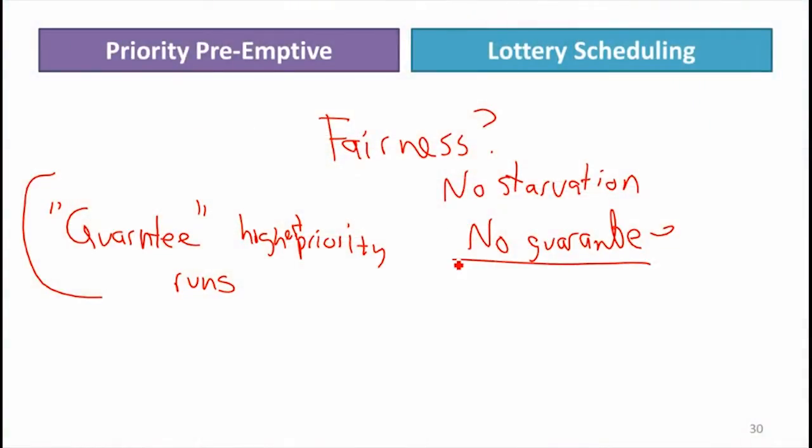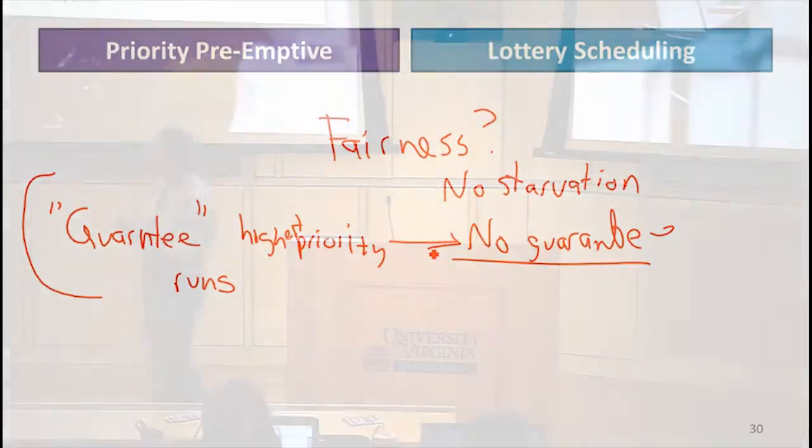That's the advantage of lottery scheduling, and it also has a big advantage: it's really simple to implement. You just randomly pick, and it gives you the control of sharing tickets. But if you don't like the lack of any guarantee — which is a pretty big deal — not having predictability about getting high-priority processes to run, there's another option.